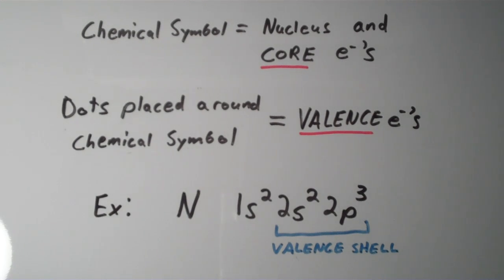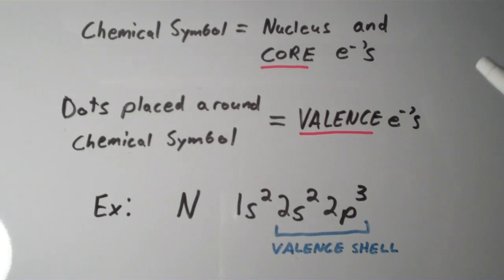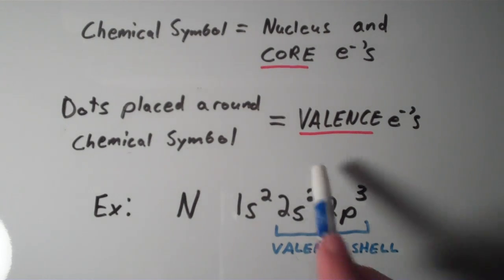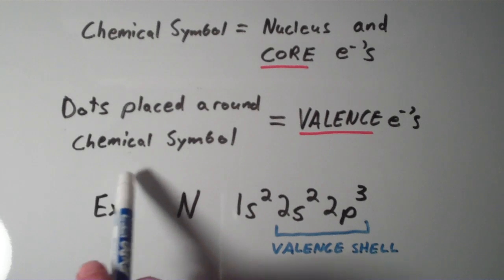Alright, so in this video I'm going to show you how to use Lewis structures to represent atoms. When we draw a Lewis structure, generally the chemical symbol of an element represents the nucleus and the core electrons of that element. And the valence electrons of the element are shown as these dots that we place around the chemical symbol.